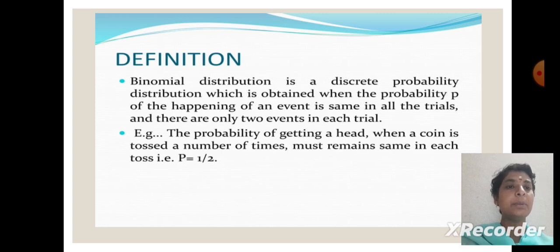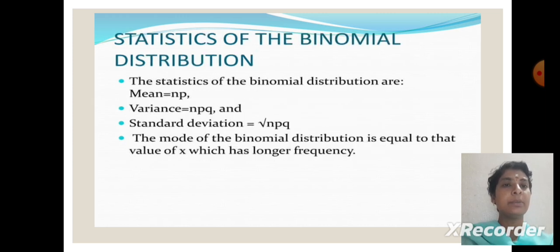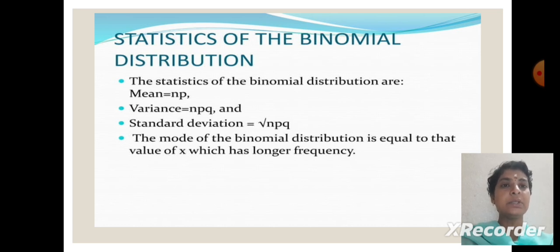Example: the probability of getting a head when a coin is tossed a number of times must remain the same in each toss, i.e., P equal to 1 by 2. The statistical definition of binomial distribution is: mean equal to np, variance equal to npq, standard deviation equal to square root of npq.